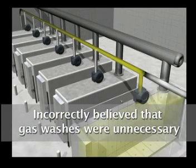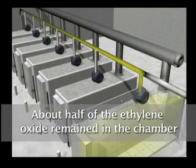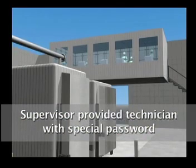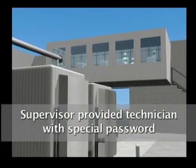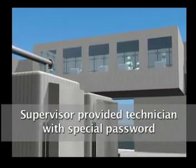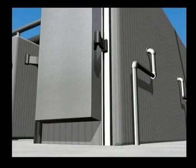All of them incorrectly believed that because there were no products in the chamber to absorb ethylene oxide, all the gas would be removed in the first step, making the gas washes unnecessary. They did not realize that about half of the ethylene oxide originally injected still remained in the chamber. There was no monitoring system to alert them to this explosive concentration of gas. The supervisor provided a technician with his special computer password to manually advance the cycle, bypassing the gas washes.